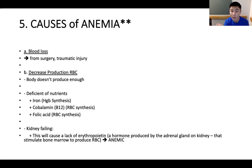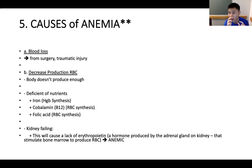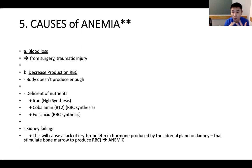Causes of anemia: first, blood loss — from surgery or traumatic injury. Second, decreased production of red blood cells, meaning the body doesn't produce enough. Anemia is basically a reduction or deficit of red blood cells. Nutritional deficiencies can also lead to anemia — a deficit in iron causes issues with hemoglobin synthesis; cobalamin (vitamin B12) plays a role in red blood cell synthesis; and folic acid also plays a part in red blood cell synthesis.